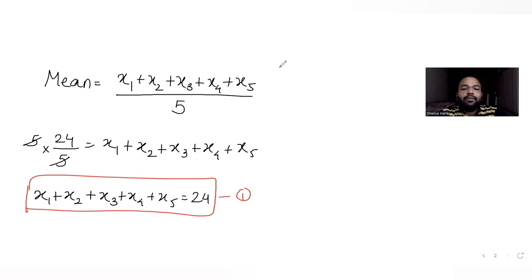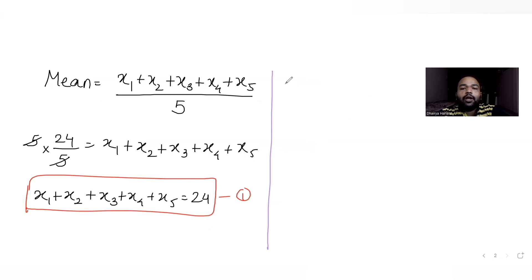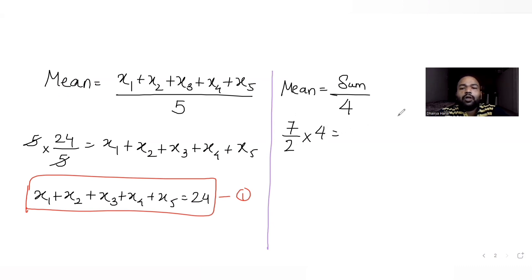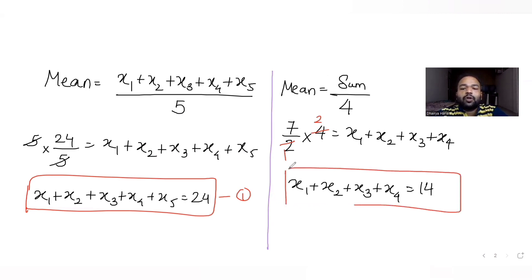Now the mean of the first 4 observations is also known: 7/2. The mean of first 4 observations is the sum of first 4 observations divided by 4. So 7/2 times 4 equals the sum of first 4 observations, which gives us 14. So sum of first 4 observations is 14.